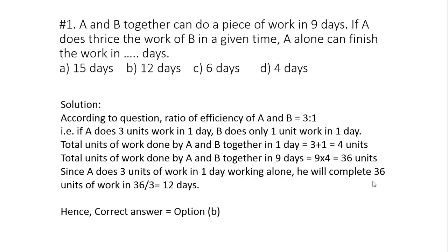Total units of work done by A and B together in nine days will be equal to 9 into 4, that is 36. But A does three units of work in one day, so in order to complete 36 units, A will take 36 divided by 3 equals to 12 days. So the right option is option B.